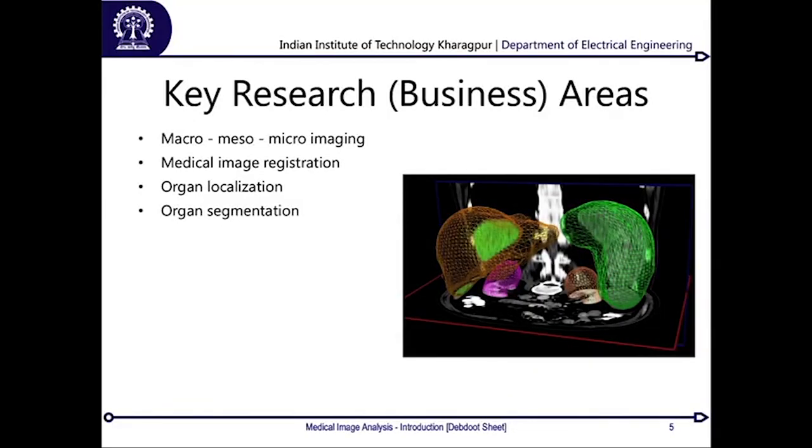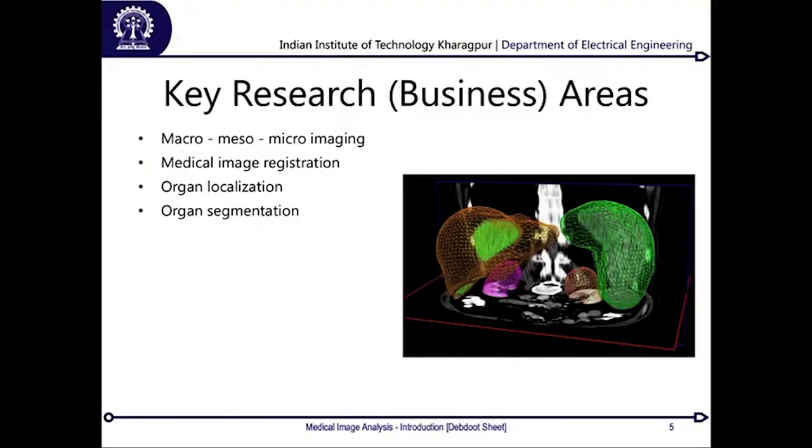From there, organ segmentation: once localization is done, can you segment out organs to give volume and surface information? For live imaging such as CT angiography or MR angiography with fast scanning, you can actually see organs in motion — looking at whether expansions and contractions are isotropic or non-isotropic. This is a critical area for organ segmentation.